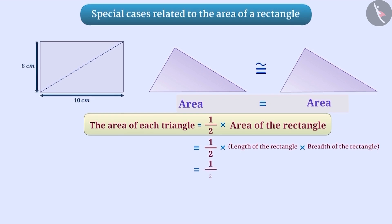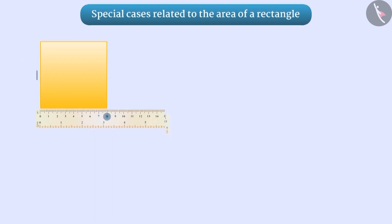Thus, the area of each triangle will be half into 10 cm into 6 cm, which is equal to 30 square centimeters.